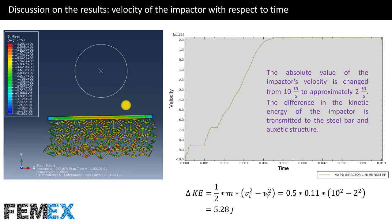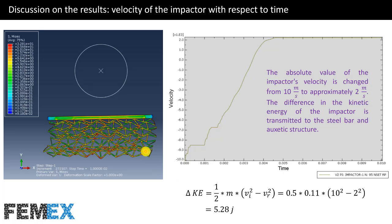Here we have the deformation pattern of the auxetic structure after impact with the circular impactor, whose mass is 0.11 kilograms. This is the velocity of the impactor versus time — the absolute value of the impactor's velocity changes from 10 meters per second to approximately 2 meters per second. The difference in the kinetic energy of the impactor is transmitted to the steel bar and auxetic structure, where the steel bar provides uniform transmission of the impact energy. I have also calculated the transmitted energy to the auxetic structure and steel bar, which equals the difference in the kinetic energy of the impactor.